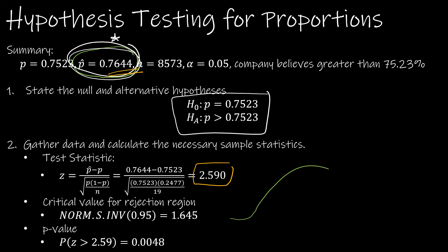The critical value is going to the right. I'm going to use norm s inverse of 1 minus alpha, so 0.95, which gives me 1.645. So 1.645 is obviously less than 2.590. Therefore, my z-score, my test statistic does fall in the rejection region, and I should be rejecting.